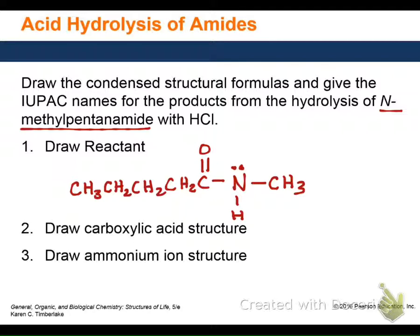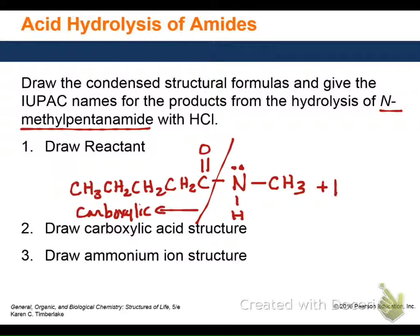Now we can draw the product for the acid hydrolysis. The way the book likes to do it, I put H2O and then HCl in here, and then there's an arrow to the products. The product is going to be the carboxylic acid and the ammonium salt.